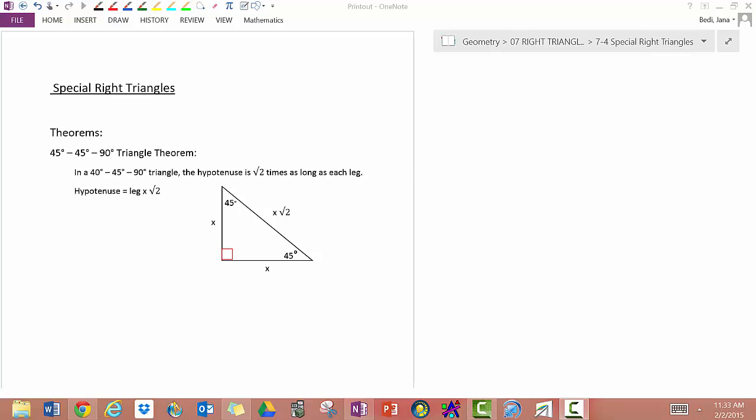We've talked about right triangles and how the Pythagorean theorem applies to right triangles. We're going to talk about two special types of right triangles today.